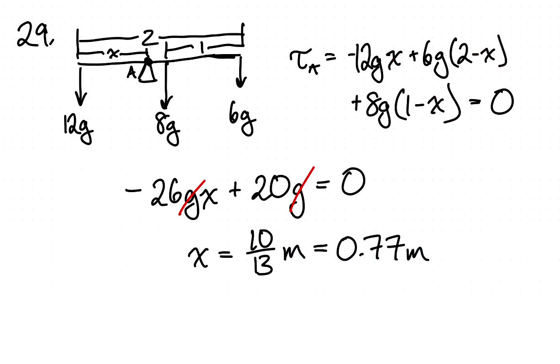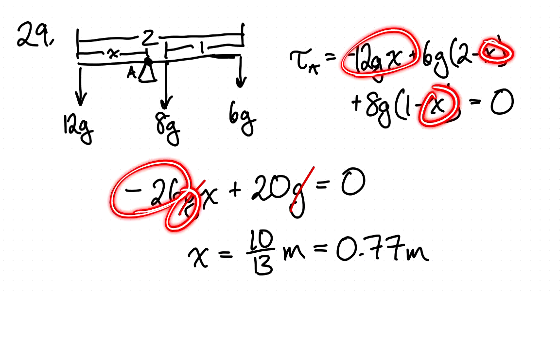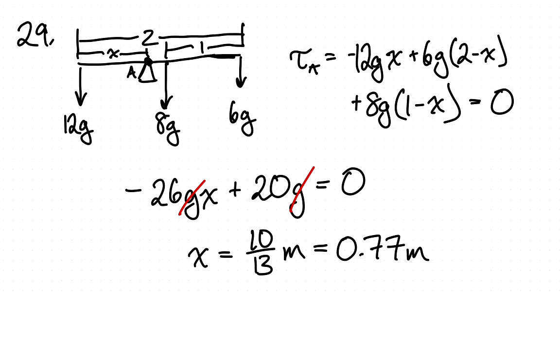So we add up all the x terms and we get minus 26g times x. We add up all the constant terms and we get 20g. So 12 plus 8 is 20 and that equals 0. So the g's drop out and we get that x needs to be 10/13 of a meter or 0.77 meters or 77 centimeters.